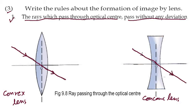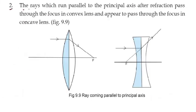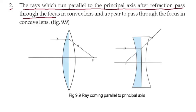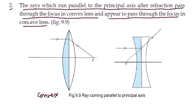That is the first rule. Now come to the second rule: the ray which runs parallel to the principal axis, after refraction, passes through the focus in a convex lens, and appears to pass through the focus in a concave lens. In the convex lens, the parallel ray goes through the focus. In the concave lens, it appears to pass through the focus — note the dotted line.